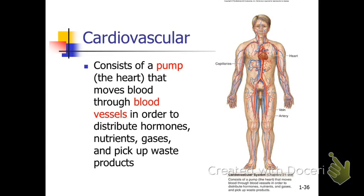Then there's the cardiovascular system — red and blue, arteries and veins, the heart. It's pumping not only blood, but the blood is also carrying oxygen, nutrients, waste products, and hormones. There are many things being distributed by the blood and by the heart.